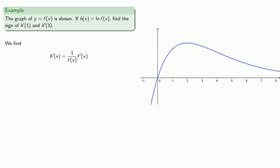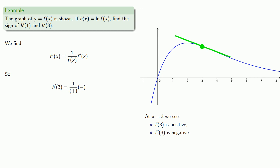Similarly, at x equals 3, f of 3 is positive and f prime of 3 is negative. So h prime of 3 is 1 over a positive number times a negative number, meaning h prime of 3 is negative.